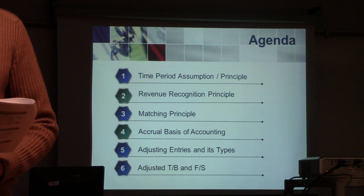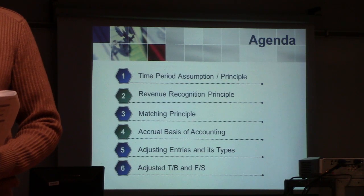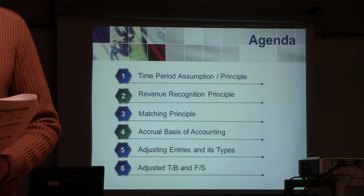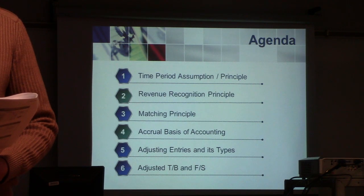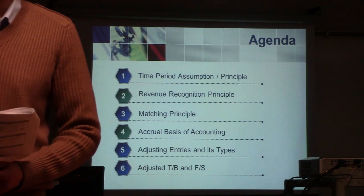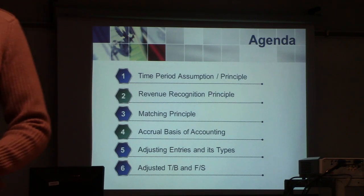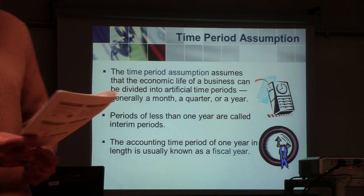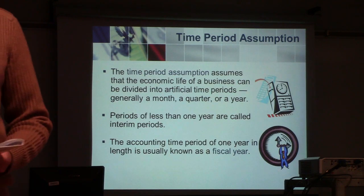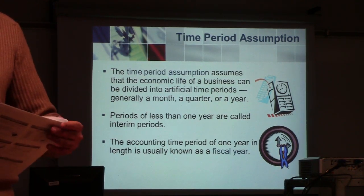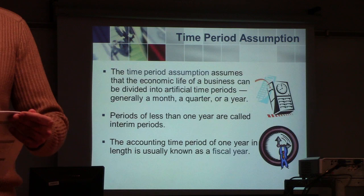Remember, you have to prepare trial balances a few times during the accounting cycle. The first time is at the end of your regular journal entries. The second time is after your adjusting entries. So, the time period assumption assumes that the economic life of a business is divided into equal parts.